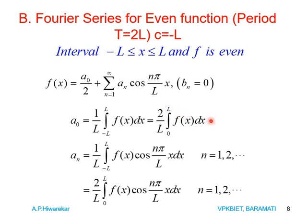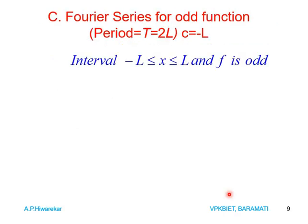Similarly, since F is an even function, cos(nπx/L) is also an even function, and the product of two even functions is even. The general formula for aₙ is (1/L) ∫ from −L to +L of F(x) cos(nπx/L) dx. Since both F(x) and cos(nπx/L) are even, the integrand is even, and by the property of definite integrals, aₙ = (2/L) ∫ from 0 to L of F(x) cos(nπx/L) dx, for n = 1, 2, 3, and so on.